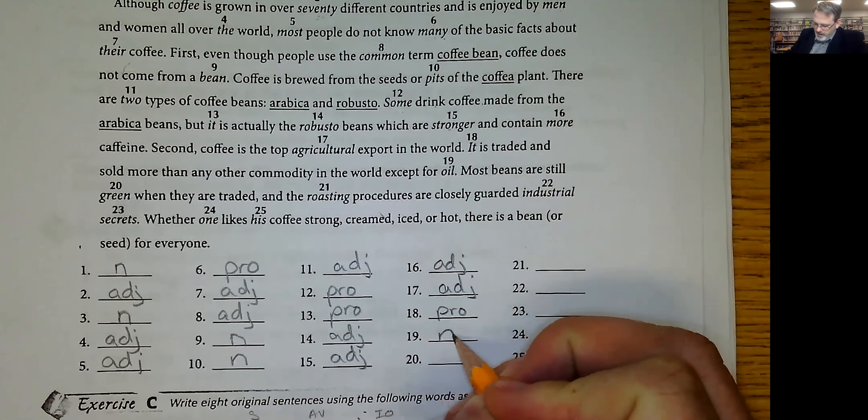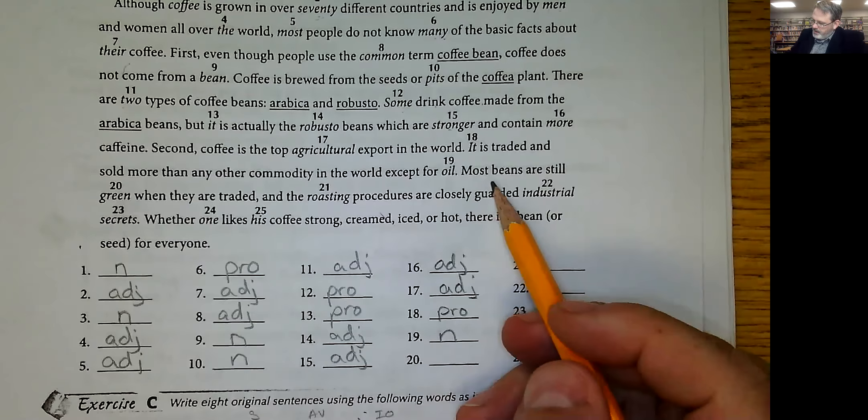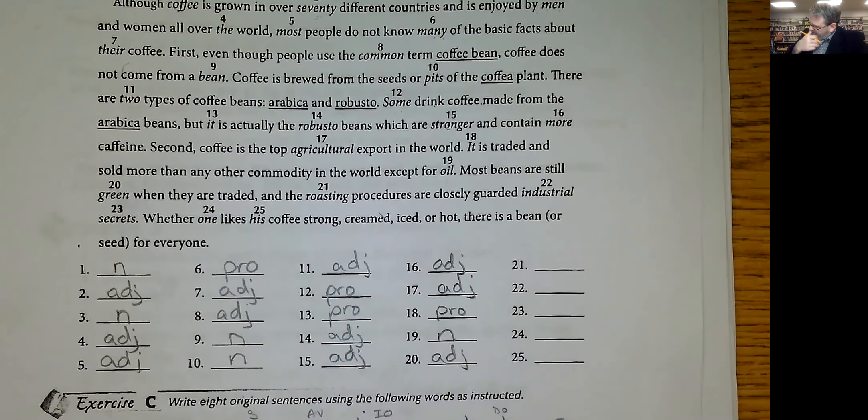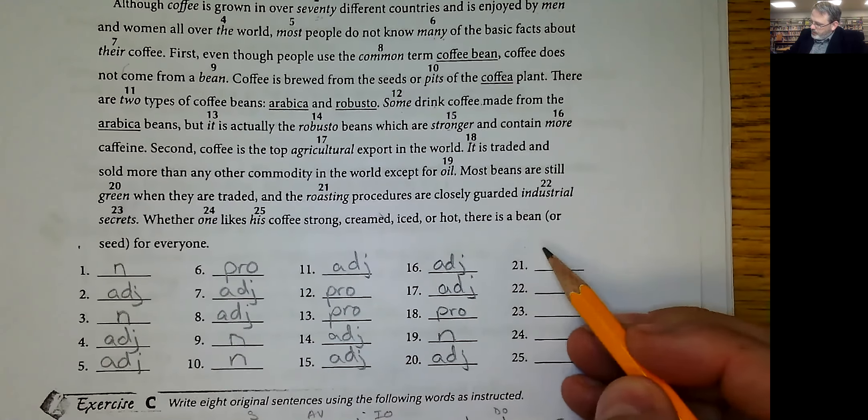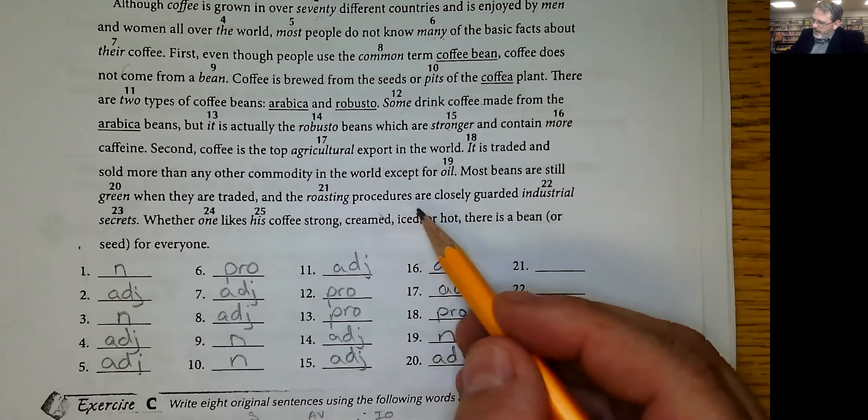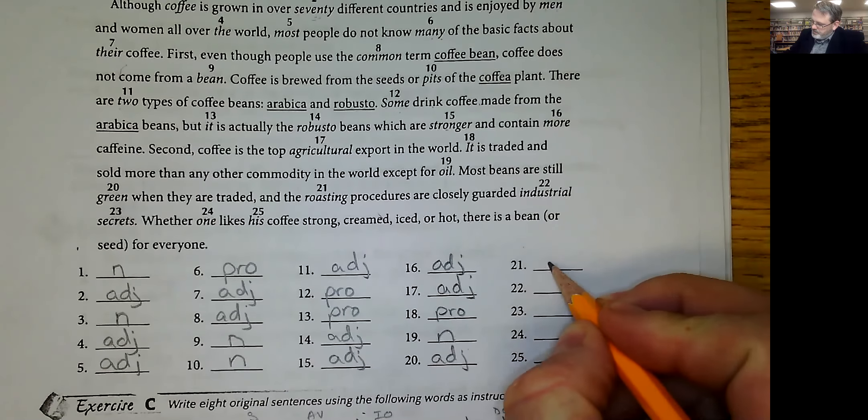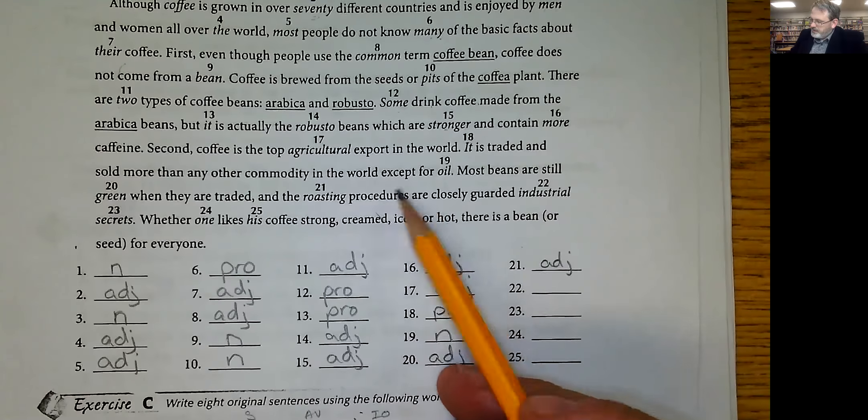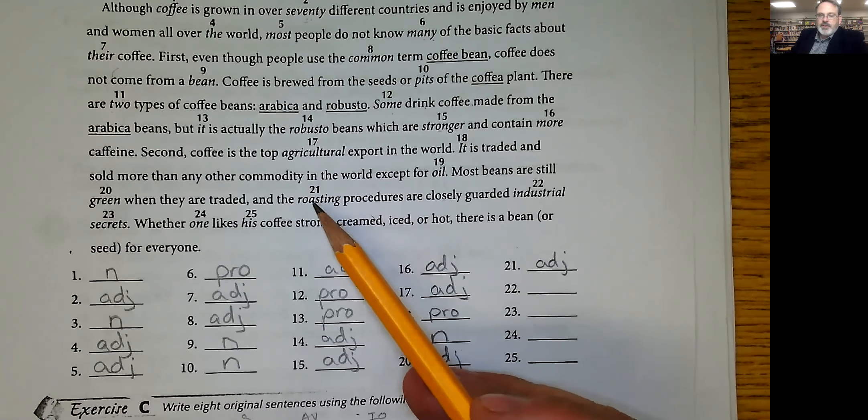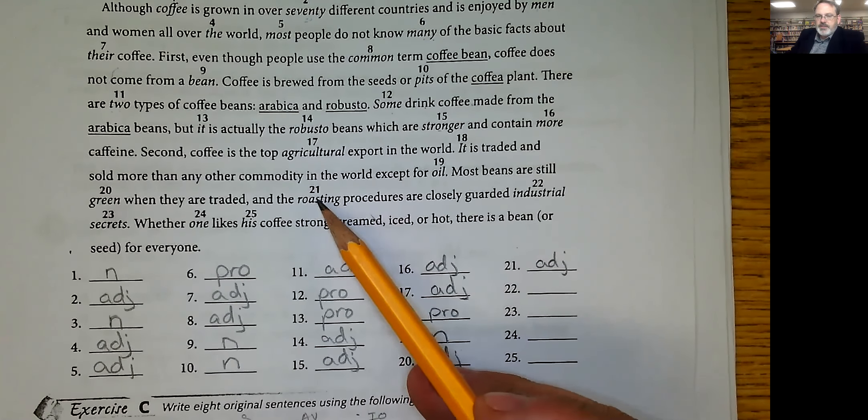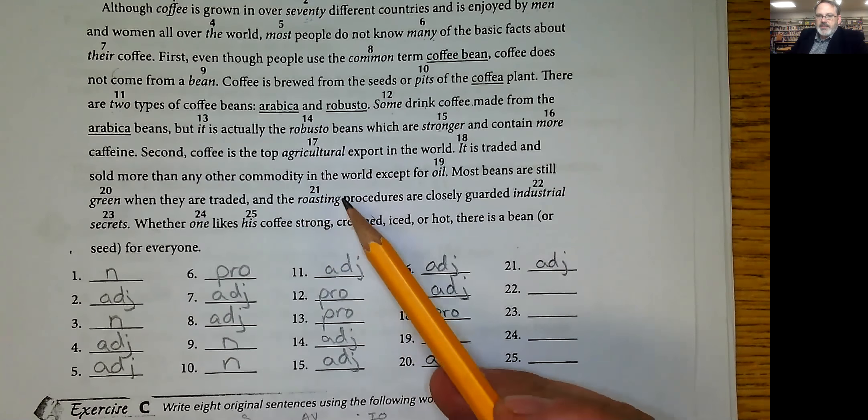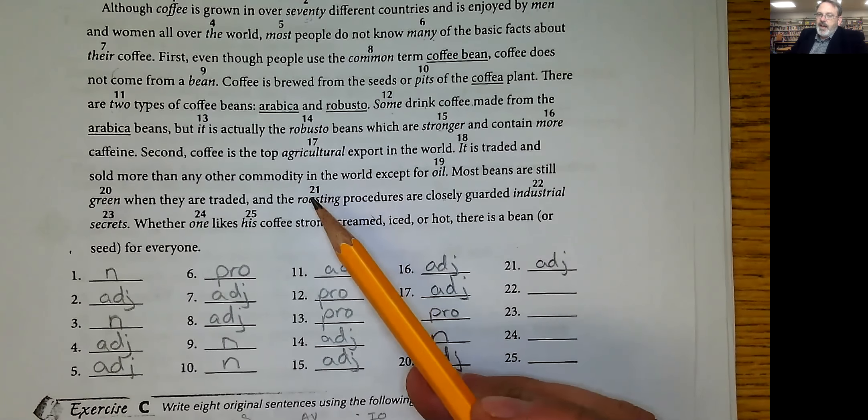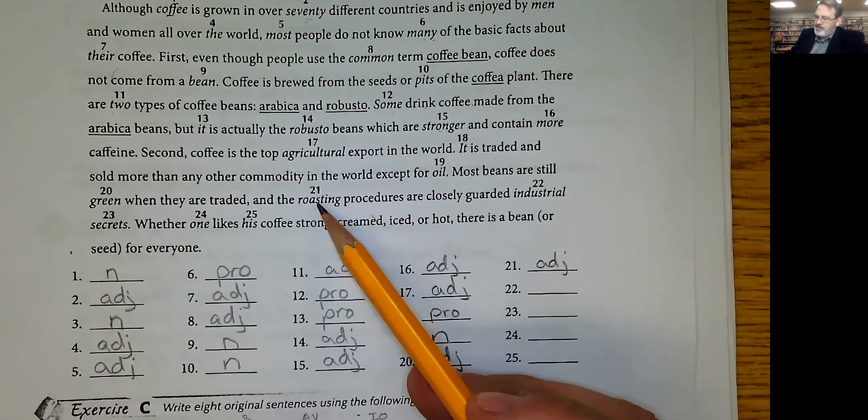That's a noun, it's a thing. Most beans are still green, that's an adjective. When they are traded and the roasting procedures, what kind of procedures, roasting procedures, that's an adjective. Incidentally, roasting, to roast something is usually a verb, but since it is not being used as a verb but it's being used as an adjective, we call that a participle.